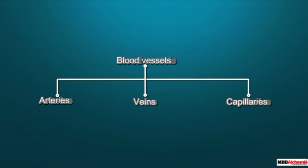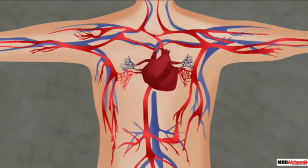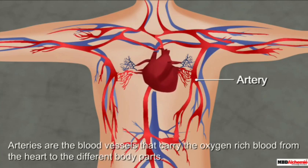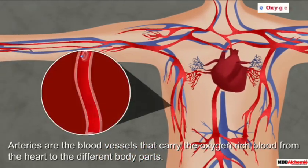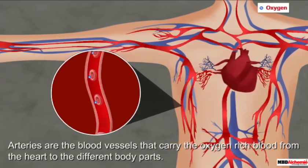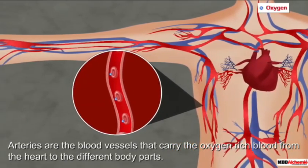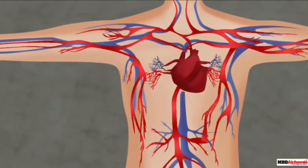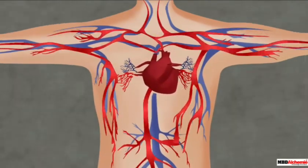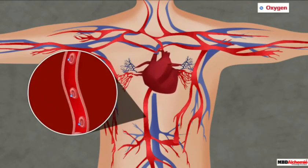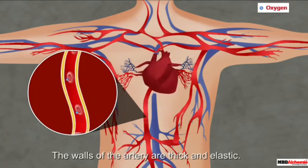Arteries are blood vessels that carry oxygen-rich, oxygenated blood from the heart to different parts of our body. The walls of arteries are usually very thick and elastic, which helps to transport oxygen-rich blood.